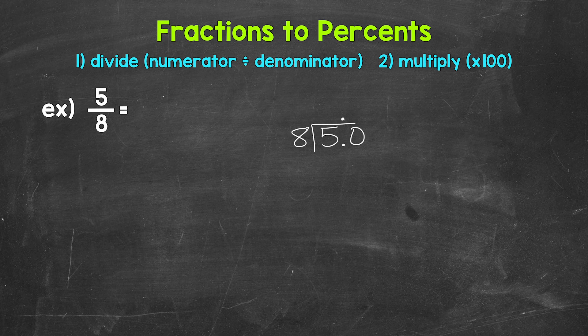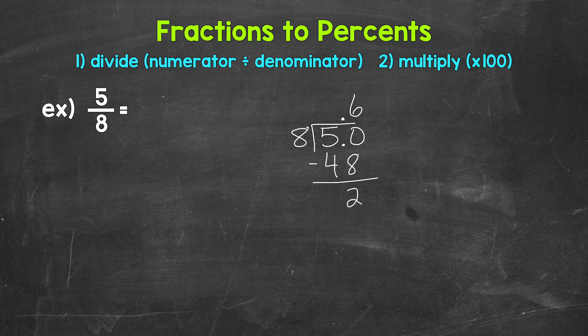How many whole groups of 8 in 50? That's 6 — that gets us to 48. We put that 6 above the zero since we used that zero and thought of this as 50. That's going to line us up correctly. Now we multiply: 6 times 8 is 48. Subtract: 50 minus 48 is 2.